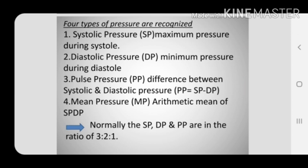Systolic pressure is the maximum pressure during systole. Systole means contraction of the ventricles of the heart. In simple words, when your heart beats, its lower part — the ventricles — contract or squeeze and push blood through your arteries to the rest of your body. This force creates pressure on those blood vessels, and that is your systolic pressure. A normal systolic pressure is below 120 millimeter of mercury.